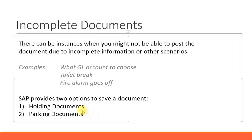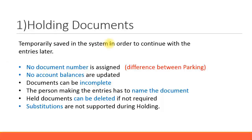The two options are: one is holding a document, and the second option is parking a document. Now, for holding a document, the important property is that no document number is assigned by the system. When you hold a document, you must put your own number in. You can give any type of number — it doesn't have to be 10 digits, it can even be alphabets — just something so that you know you have held this document.